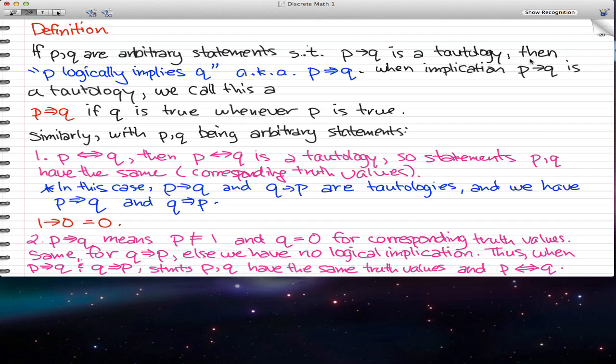So if P implies Q is a tautology, then P logically implies Q. That's also known as P double bar arrow Q. That's how we write the logically implies. We write logically implies by having an equal sign and then an arrow at the end of that equal sign. That's logical implications in a sense.